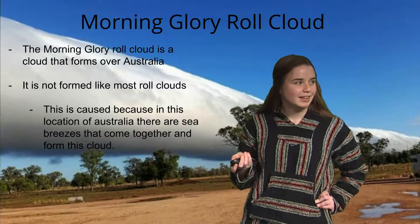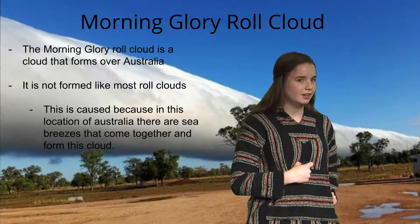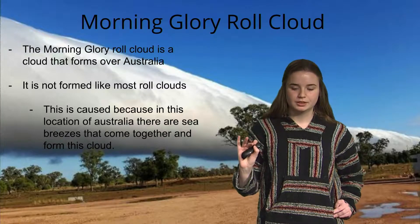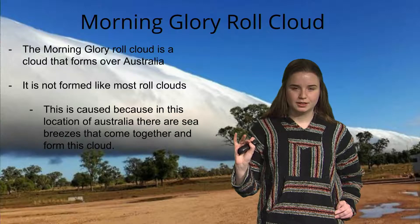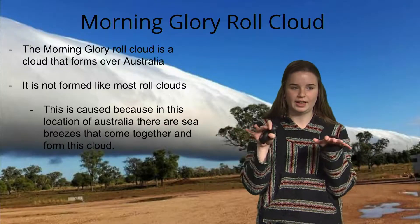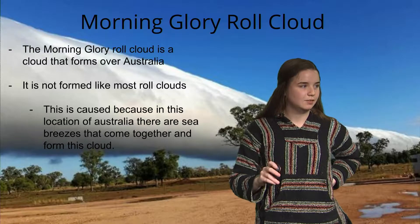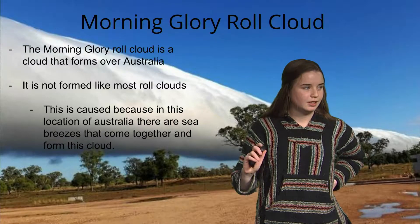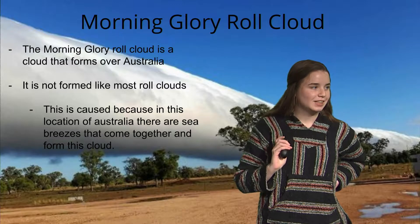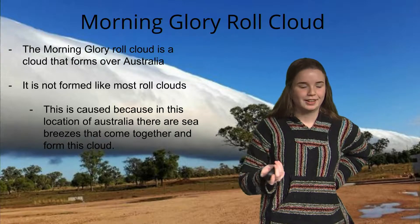A well-known roll cloud is the Morning Glory roll cloud. This is on a peninsula in Australia, but this one is not created from a storm — it's created because two sea breezes collide and create this rolling effect. The cloud can be seen across the whole sky, and it's been named because it's pretty, it's not common, but it comes up a lot.